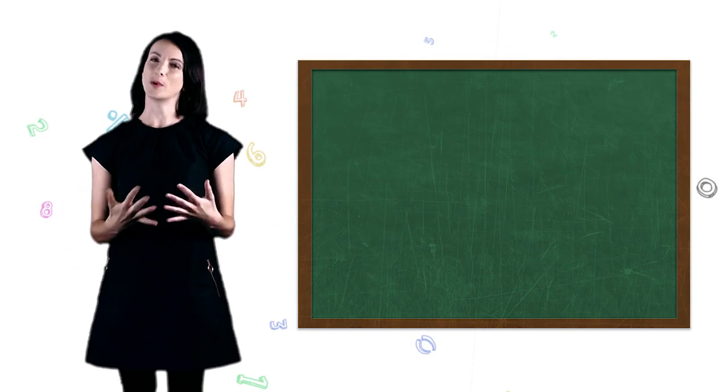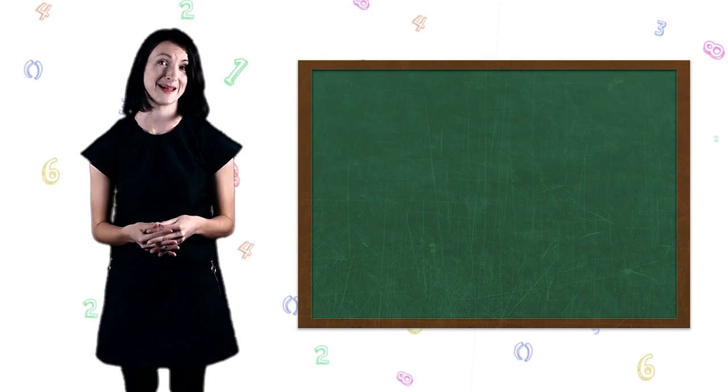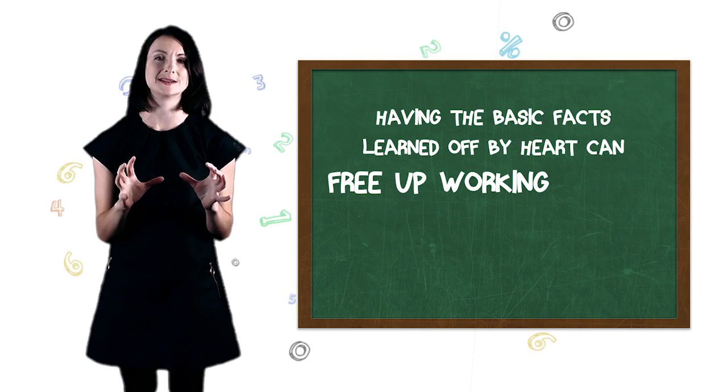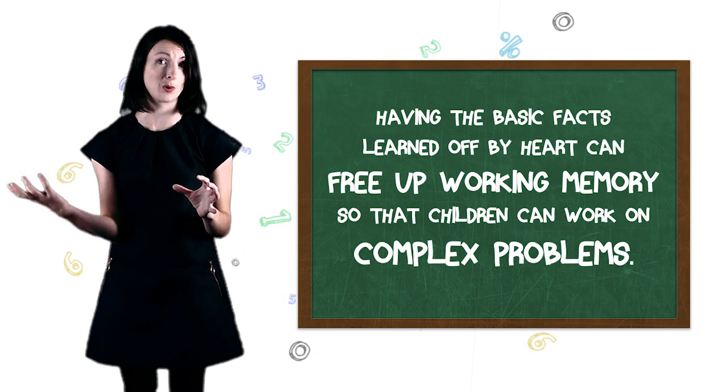We're not suggesting that New Zealand throws the baby out with the bathwater. We don't want to go back to the days where children are just rote learning information without understanding the numbers and how they connect. But when it comes time to doing more complex maths like algebra, for example, having the basic facts learned off by heart can free up working memory so children can work on the more complex stuff. Imagine if you had to think through all the different strategies for the answer to six times nine, for example, for solving an algebra problem. All of the energy goes into thinking through those strategies rather than working on the more complex maths.